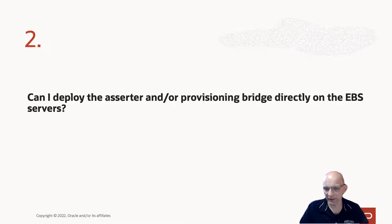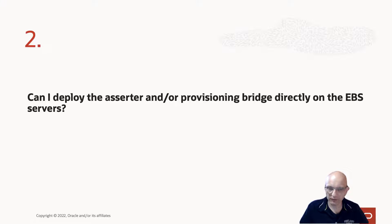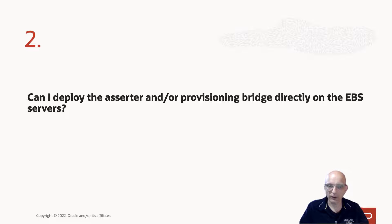They might be requiring different Java versions, so you don't really want to be managing different versions of Java on your EBS servers. By putting them on different servers, it means you can scale them independently and manage them independently without worrying about potential dependencies or conflicts. So I would always suggest putting the Assertor and the Provisioning Bridge on their own sets of servers and leaving the EBS servers alone.